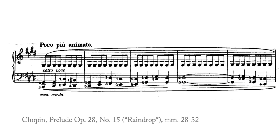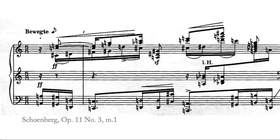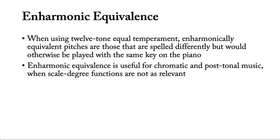Conversely, later in the piece, Chopin changes the key signature. In this passage, C sharp is the tonic and has a much greater meaning in the surrounding context than D flat does. But what about that Schoenberg piece we looked at earlier? Why does Schoenberg write D flat here and C sharp here? This passage is not in a key, so the perceptual difference between C sharp and D flat is much less meaningful. Schoenberg likely wrote C sharps and D flats where he did because they formed more familiar intervals for the performer, but as listeners the notational difference doesn't really matter. What I'm describing here is called enharmonic equivalence. When using 12-tone equal temperament, enharmonically equivalent pitches are those that are spelled differently but would otherwise be played with the same key on the piano. Enharmonic equivalence is useful for analyzing chromatic and post-tonal music, when scale degree functions are not relevant or when composers intentionally play with the ambiguity created through enharmonic equivalence.